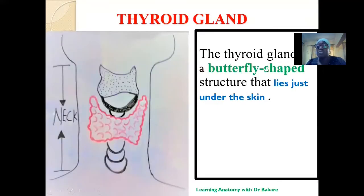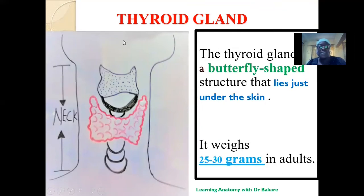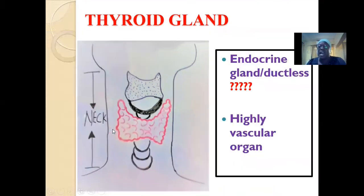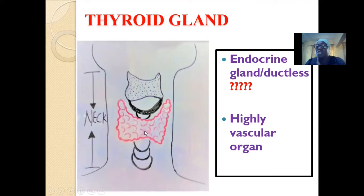The thyroid gland is a butterfly-shaped structure located under the skin in the neck region. It weighs about 25 to 30 grams. It is an endocrine type of gland — meaning it is ductless and does not release its secretions through a duct like the salivary gland. Instead, the secretions of the thyroid gland are released directly into the bloodstream.